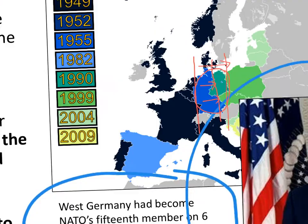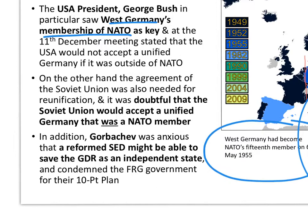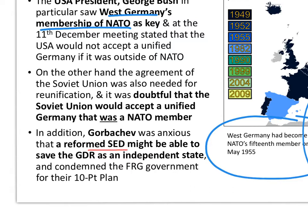So there was a Cold War sticking point. The USA wants a united Germany to be part of NATO; the Soviet Union doesn't. In addition, Gorbachev was anxious that a reformed SED — which had become the PDS, the Party of Democratic Socialism — might be able to save the GDR as an independent state.